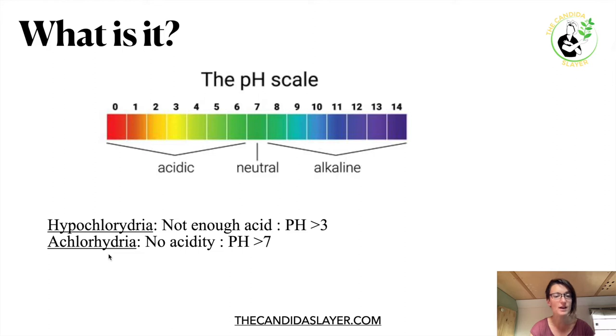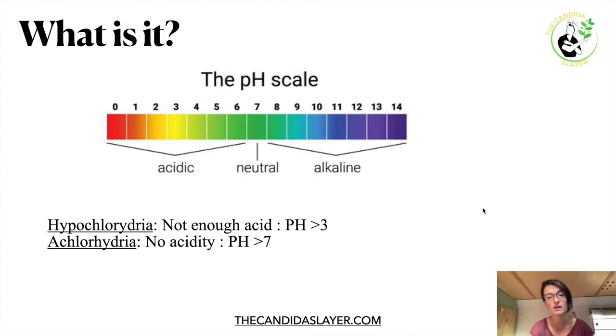Achlorhydria is when there is no acidity at all — it's at least pH 7, meaning neutral to alkaline.